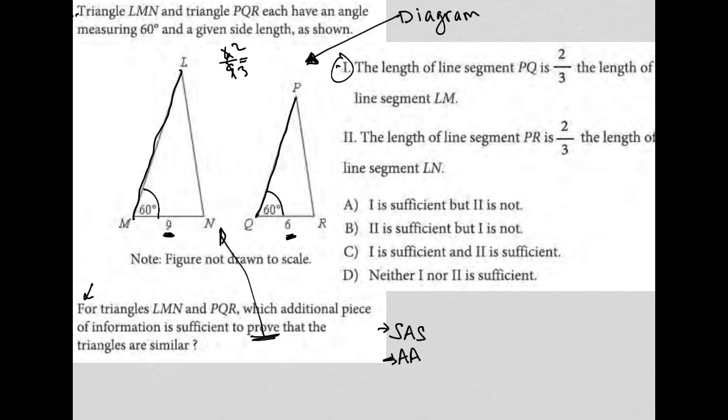If I knew that, if I knew this and this, then I would in fact have SAS, wouldn't I? Because I'd have these two proportional sides here, these two proportional sides there, and this angle. The A in the middle of those two sides. So that is definitely sufficient.